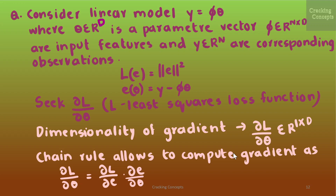Now we will see the case where we find the gradient of a least squares loss in a linear model. We consider the linear model y = Φθ, where θ belongs to ℝᵈ is the parameter vector, Φ belongs to ℝⁿˣᵈ represents the input features, and y belongs to ℝⁿ are the corresponding observations. We are given l(e) = ‖e‖² and e(θ) = y − Φθ. We need to find ∂l/∂θ using the chain rule. Here l is called the least squares loss function.